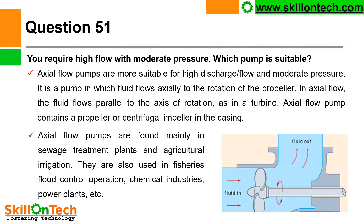Question 51: You require high flow with moderate pressure — which pump is suitable? You can see a picture of an axial flow pump. Axial flow pumps are more suitable for high discharge, high flow, and moderate pressure. It is a pump in which fluid flows axially to the rotation of the impeller — the fluid flows parallel to the axis of rotation, as in a turbine. Axial flow pumps contain a propeller or centrifugal impeller in the casing, and are found mainly in sea waste treatment plants, agriculture irrigation, fisheries, flood control, chemical industries, power plants, etc.